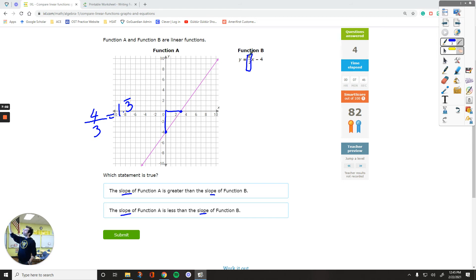Remember, mx plus b. m is 1 over 2. When you have the slope intercept form, the number in front of the x is the slope you have. So it's 1 over 2. And if you divide these two numbers, that's 0.5. Which one has a greater value? The first one, function A, has a greater value. So that slope of A is greater.